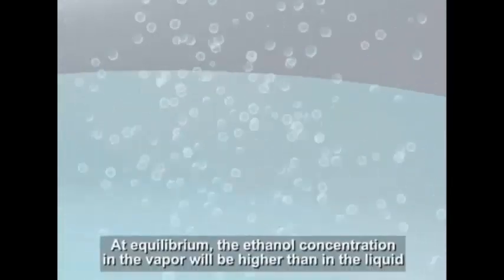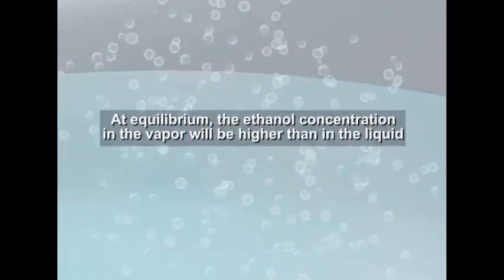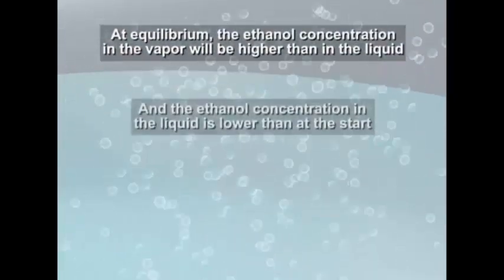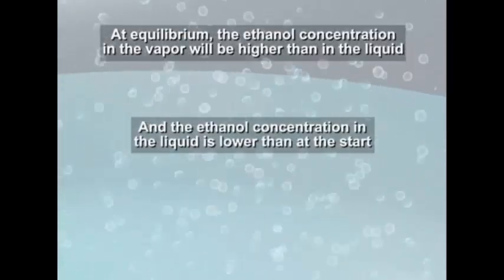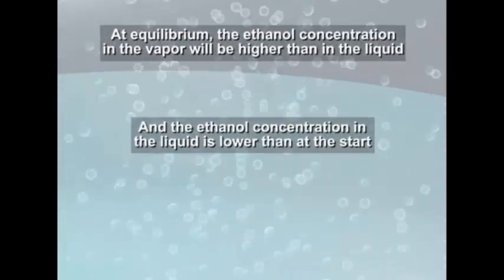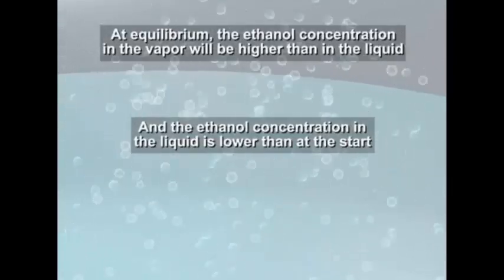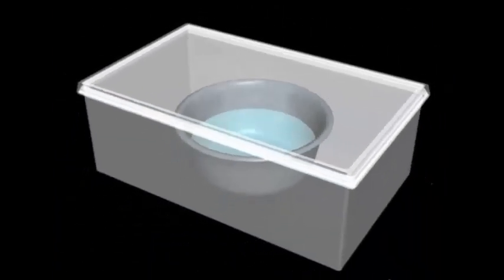At equilibrium, the concentration of ethanol in the vapor will be higher than the concentration of ethanol in the liquid mixture. Since the vapor has a higher concentration of ethanol, the liquid must have a lower concentration than before any of the ethanol evaporated. As a result, the liquid has become less concentrated in ethanol.